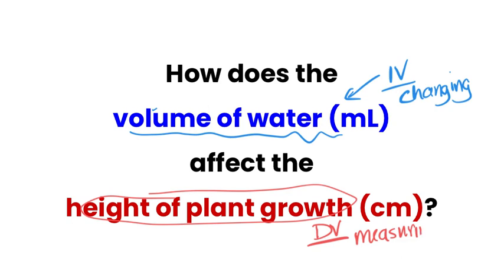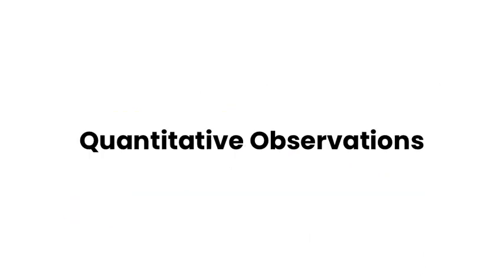So as we're doing this experiment, we would be giving the plants different volumes of water and then looking at how much they grew. Now let's start off with quantitative observations. So what are quantitative observations? Well, quant is kind of short for the word quantity. And so what that means is data that involves numbers.